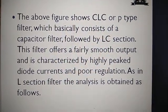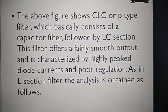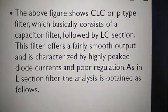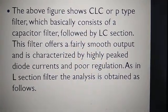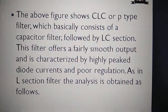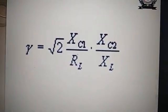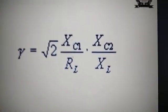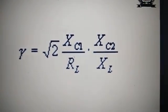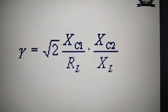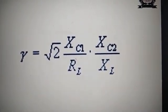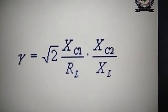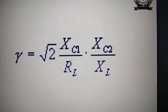This filter offers a fairly smooth output and is characterized by highly peaked diode currents and poor regulation. As in the L-section filter, the ripple factor is: γ = √2 · (XC1/RL) · (XC2/XL), where XC1 is the reactance of capacitor C1, XC2 is the reactance of capacitor C2, RL is the load resistance, and XL is the reactance of the inductor.